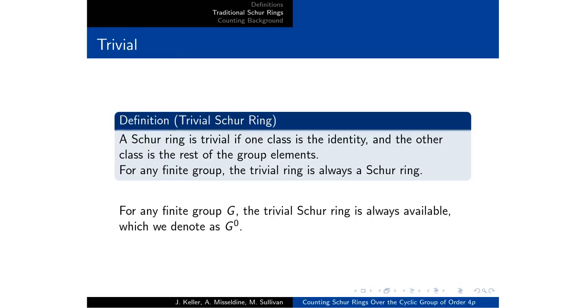There are a couple different types of Schur rings we'll be interested in. The first being a trivial Schur ring. This is the one wherein one class is the identity and every other element belongs to the second class. We will denote this with a superscript zero.